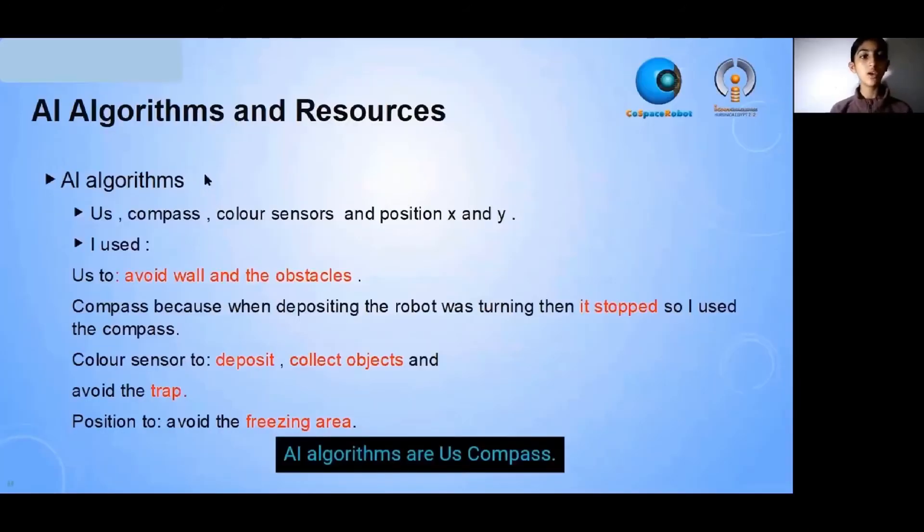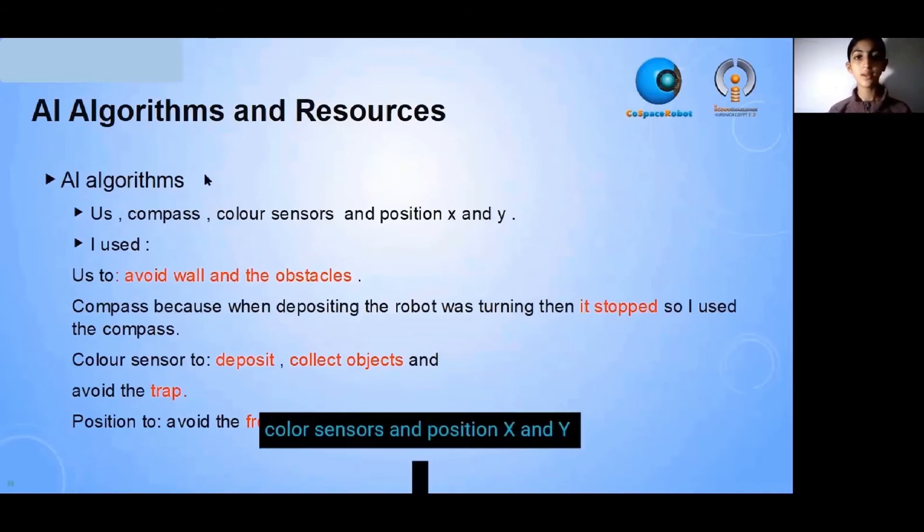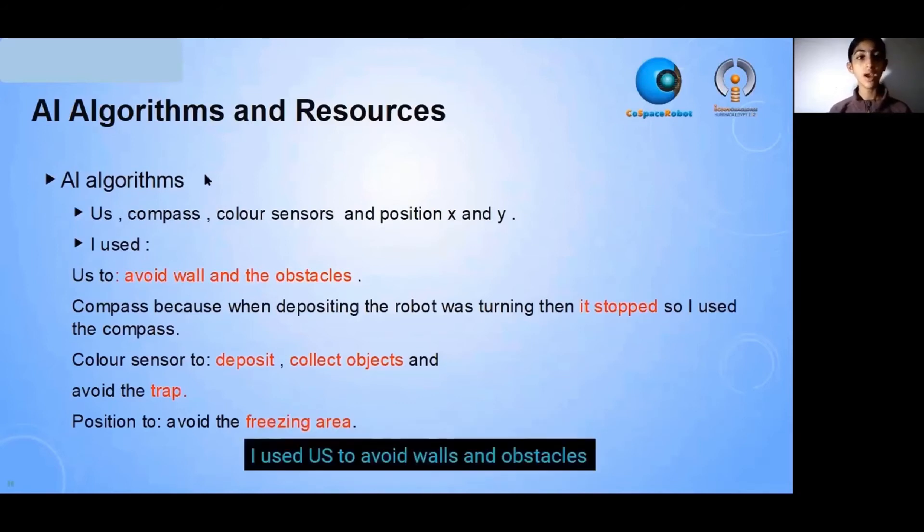AI algorithms are US, compass, color sensors, and position X and Y. I used US to avoid walls and the obstacles.